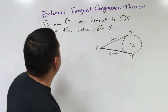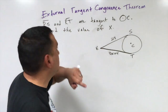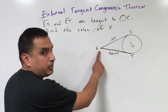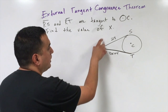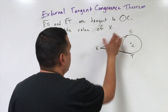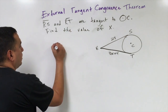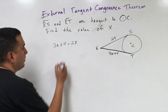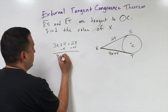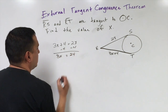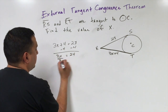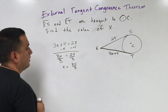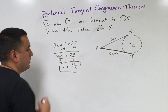The next problem says segments RS and RT are tangent to circle C; find the value of X. Since they share the common endpoint R, we set 3X + 4 = 28. Subtracting 4 from both sides: 3X = 24. Dividing by 3: X = 8.